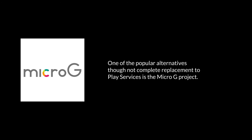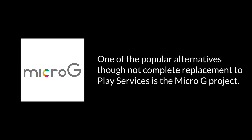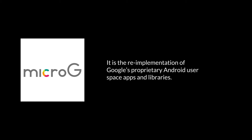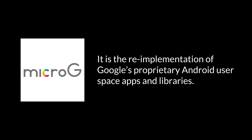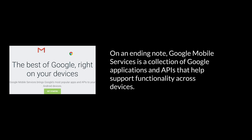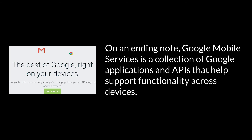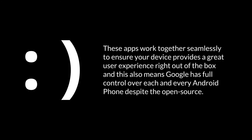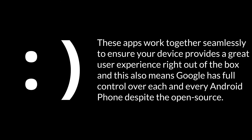One of the popular alternatives, though not a complete replacement, to Play Services is the Micro-G project — a reimplementation of Google's proprietary Android user-space apps and libraries. On an ending note, Google Mobile Services is a collection of Google applications and APIs that help support functionality across devices. These apps work together seamlessly to ensure your device provides a great user experience right out of the box, and this also means Google has full control over each and every Android phone despite the open-source nature of Android.